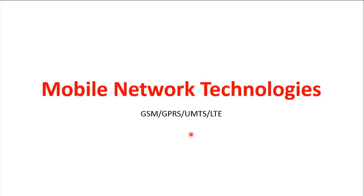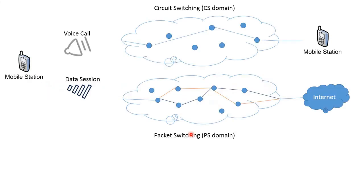Mobile network technologies have evolved over time to satisfy the increasing customer needs for higher data rates and better services. The mobile station should be able to make voice calls in addition to data sessions. The voice calls in the mobile network use circuit switching, while the data sessions use packet switching.